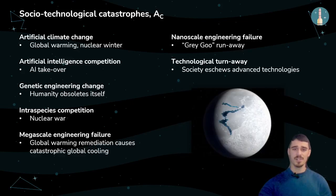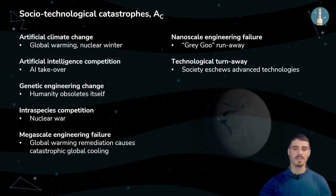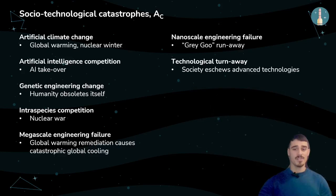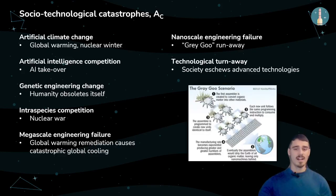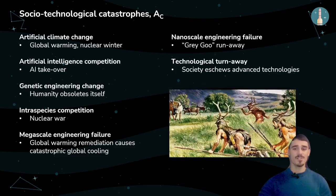Megascale engineering failure — we could, by accident, cause the next ice age while trying to construct a mechanism meant to stop global warming. Nanoscale engineering failure — accidentally releasing organic matter-converting and multiplying nanobots could mean the end of humankind. And finally, technological turn away — where humankind decides to turn away from technology and wander back into nature, ignoring modern medicine and all possible dangers from space.